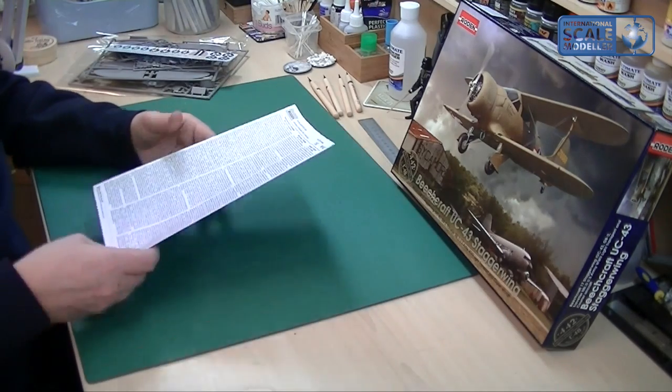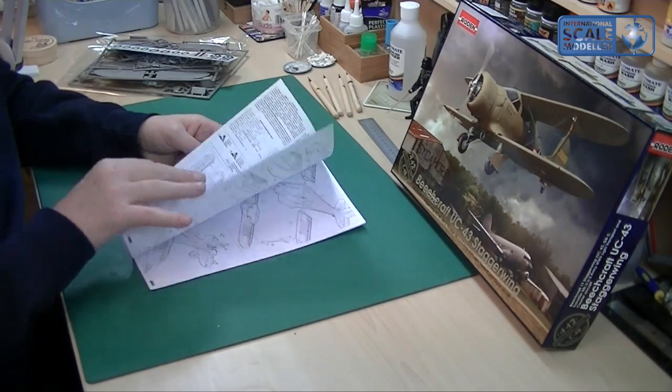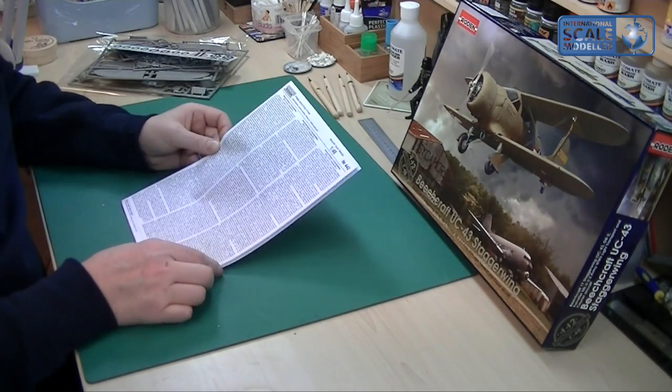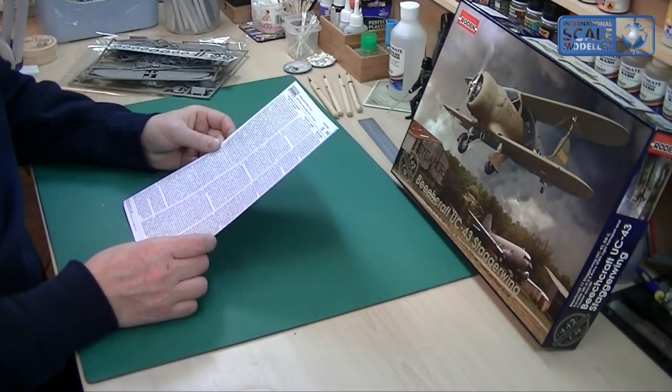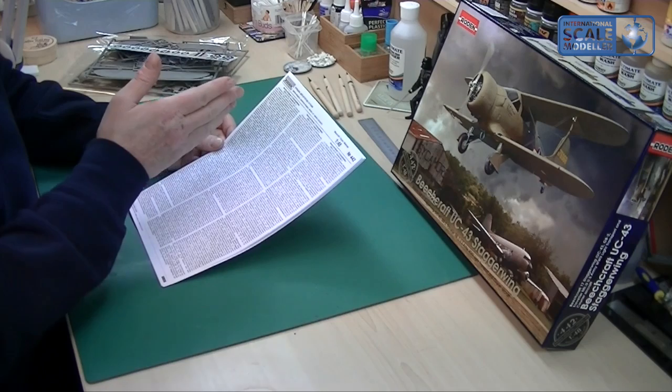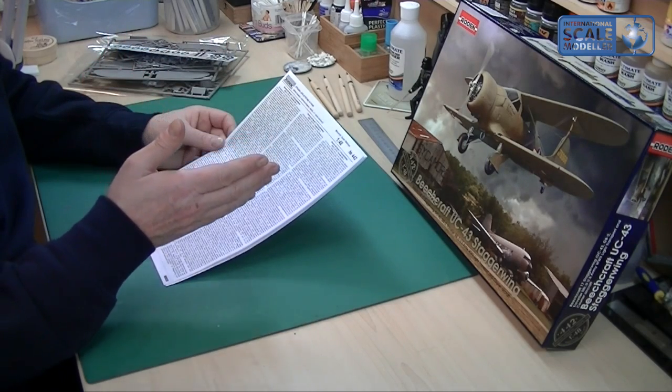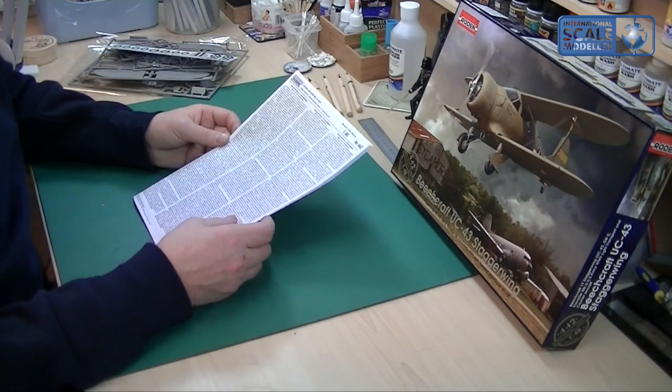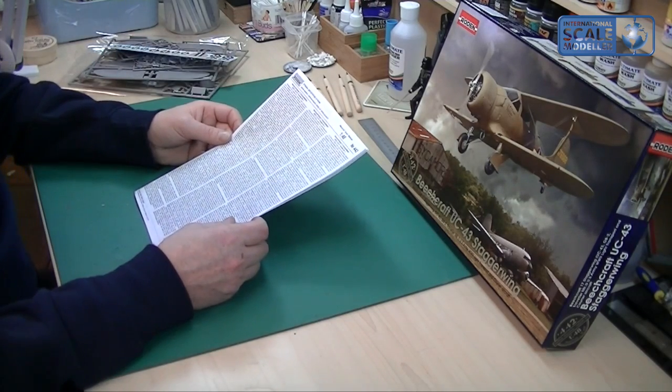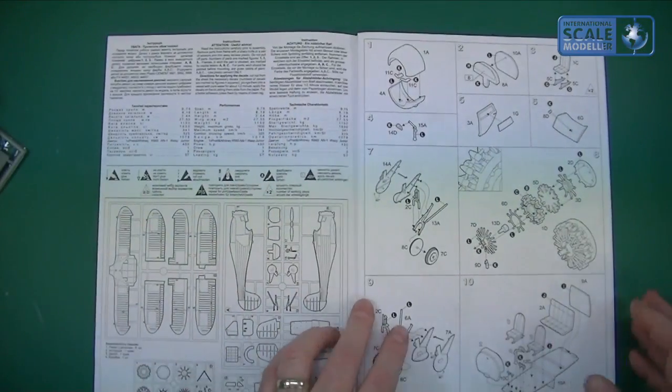Now the instruction manual is definitely a photocopied A4, slightly smaller than A4 piece of paper. There's a lot of write-up which I do like about the Beechcraft Staggerwing. It looks like there's Russian, English and I would say German on there. So there's quite a bit going on there.